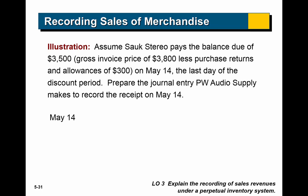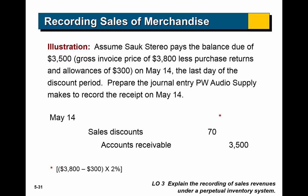Here's another example: they pay the balance due of $3,500 on May 14th — the last day of the discount period. The gross invoice price was $3,800 less purchase returns and allowances of $300. This is the journal entry PW Audio would record: accounts receivable decreases (credited) by $3,500 — they're no longer owed that amount. Sales discount is debited $70, and cash increases by $3,430. The customer paid $3,430 in cash, but accounts receivable was reduced by $3,500 — the difference is the $70 sales discount.